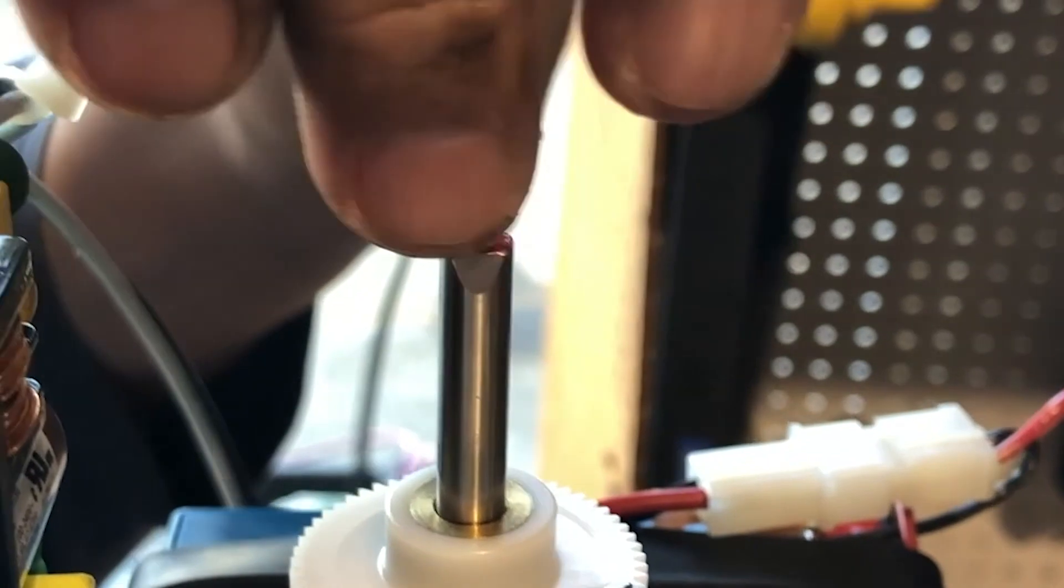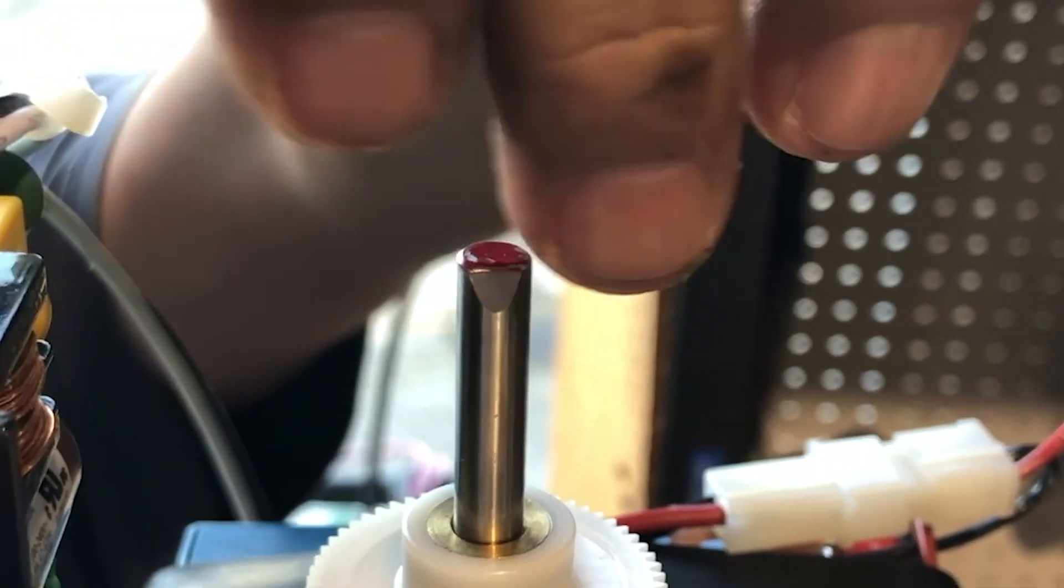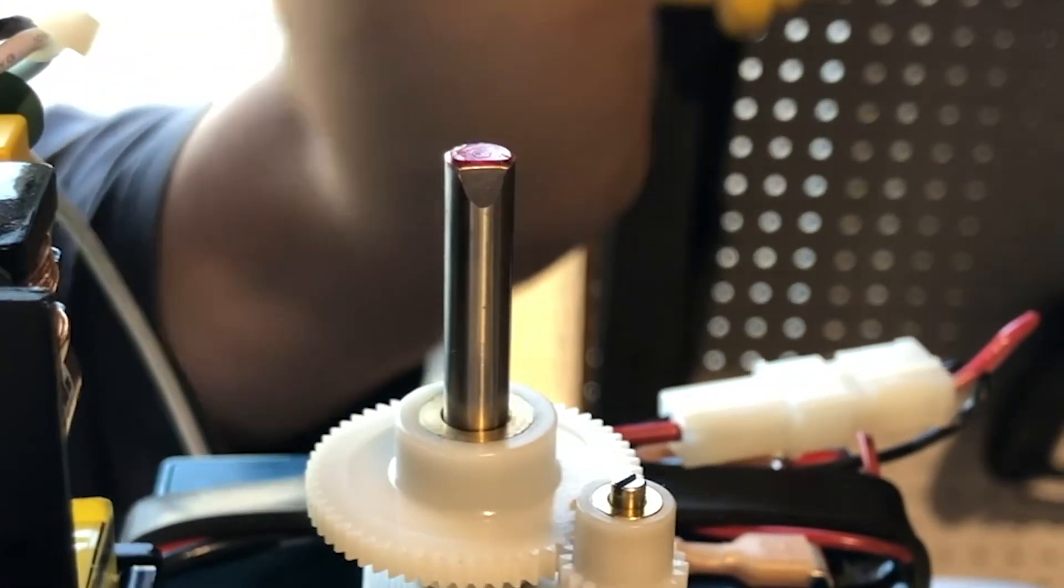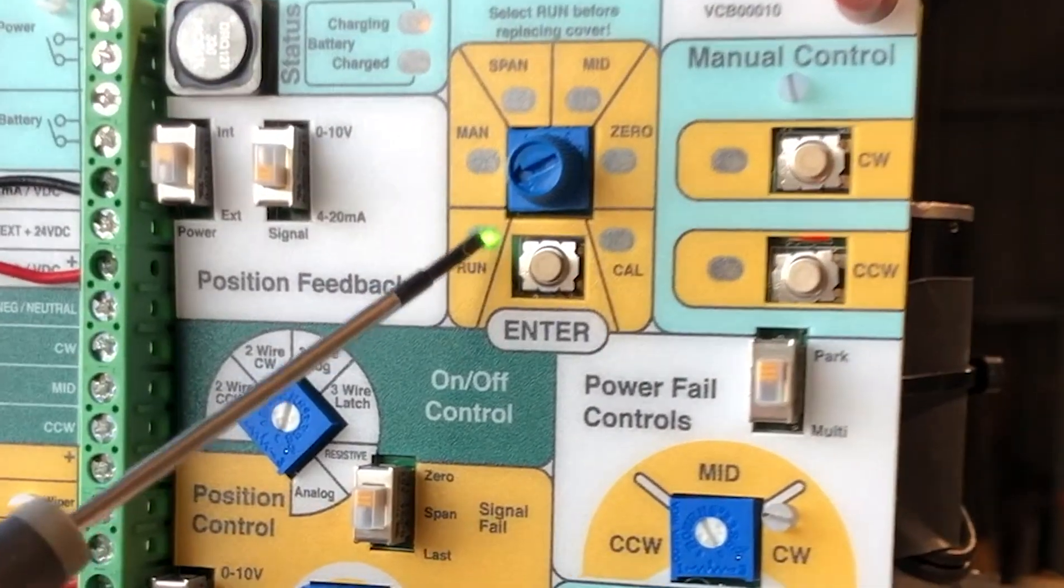Next we want to come over to the notch on the top of the actuator on the main shaft. This notch will be perpendicular to the back of the board now that it's open. Next we go into the run position.